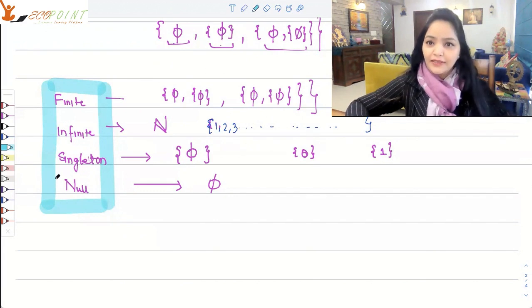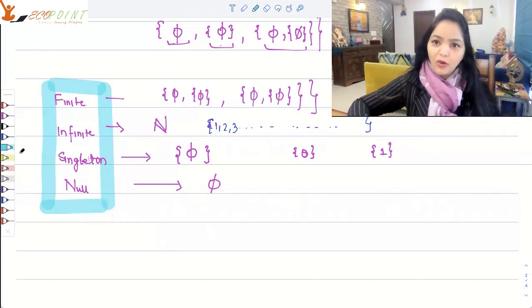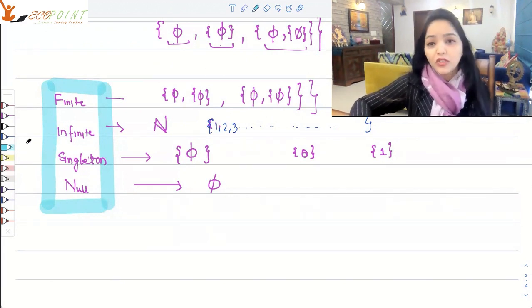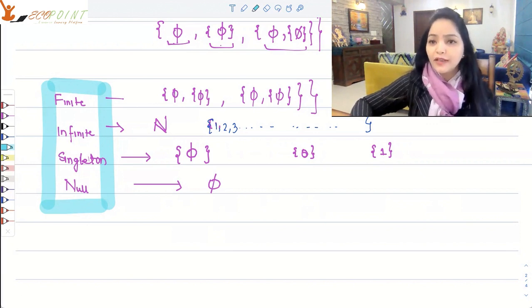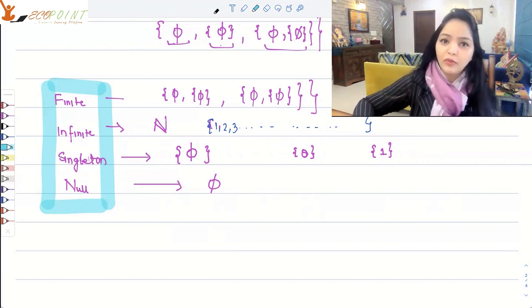What we've just done is classify sets in terms of finite, infinite, singleton, and null sets. The next lecture will be on operations on sets that we can apply, and what are the major properties around these operations. Thank you.